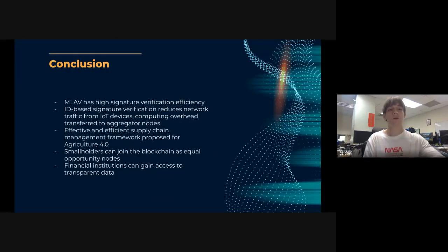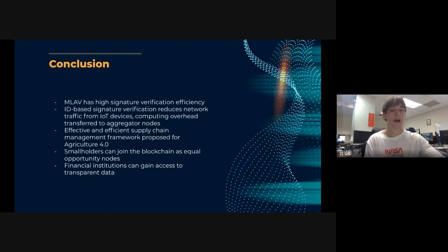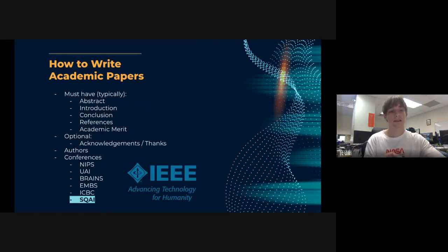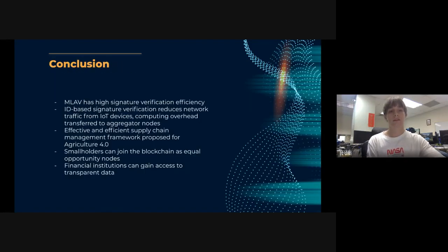In conclusion, our Multi-Layer Aggregate Verification achieves high signature verification efficiency. ID-based signature verification reduces network traffic from IoT devices, with computing overhead transferred to aggregating nodes rather than the IoT devices themselves. We achieve financial institution data transparency and allow smallholders to gain access to blockchain as equal opportunity nodes. That completes our presentation on multi-layer aggregate verification. Thank you.